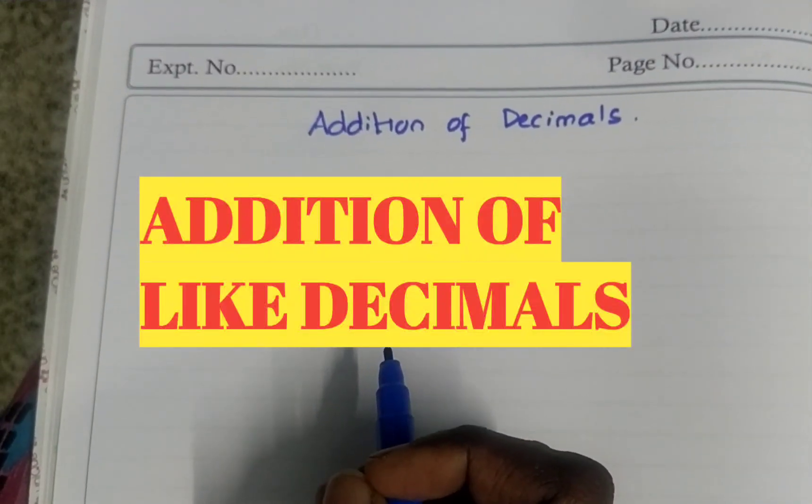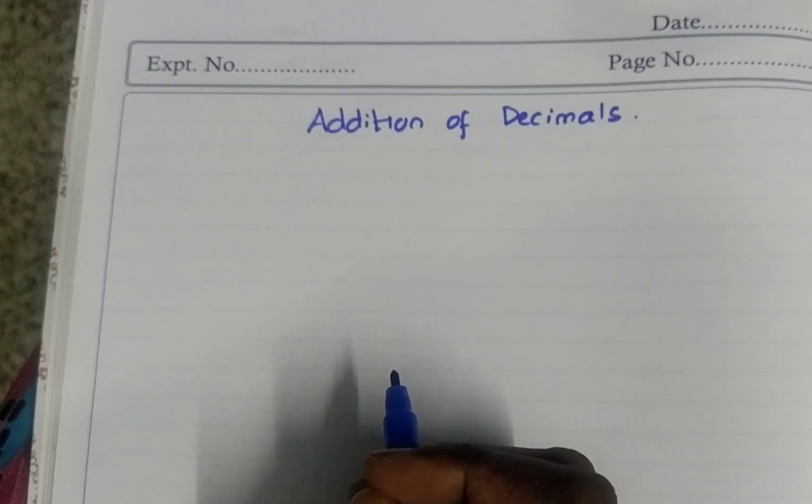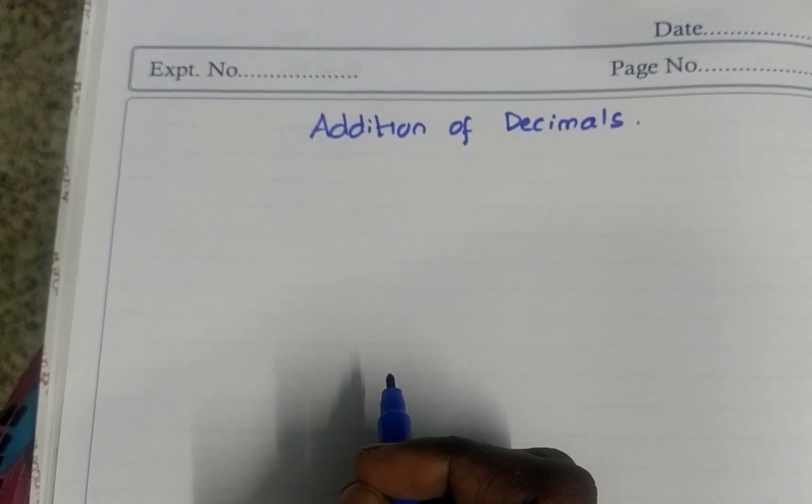Hello students, today let's learn about addition of decimals. What is meant by decimals like 3.5, 4.2, wherever there will be a point, that is called decimals.